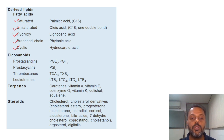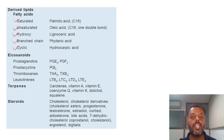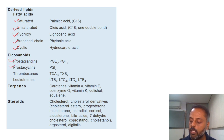Eicosanoids are derivatives of 20-carbon containing fatty acids such as arachidonic acid. They are further classified into four main categories: prostaglandins, prostacyclin, thromboxanes, and leukotrienes.